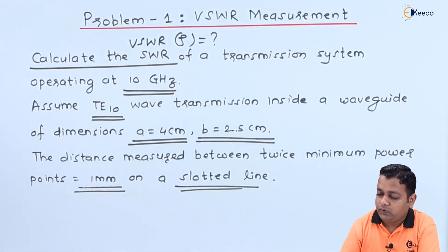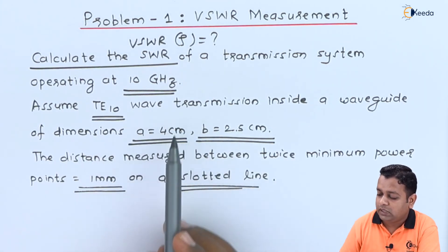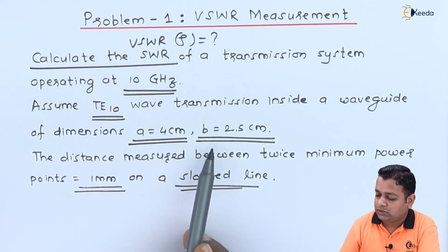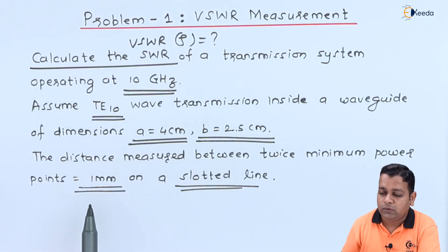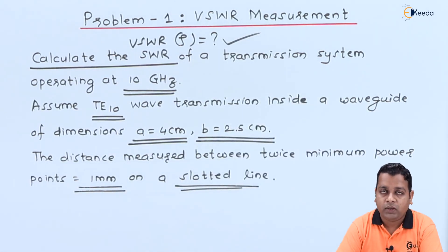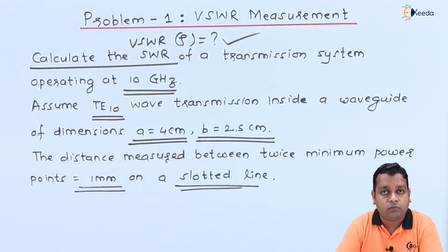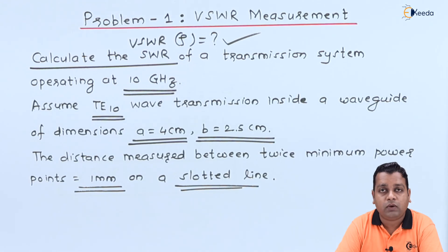Going back to the problem statement, for the given details of mode of propagation, frequency, internal cross-section dimensions, and distance between the two minima, we are successful in determining the VSWR value. I hope it is very clear how to solve problems for VSWR measurement. By the next lecture we shall continue with the same topic, practicing more problems in microwave engineering. You can subscribe to the Ekeda channel. Thank you.